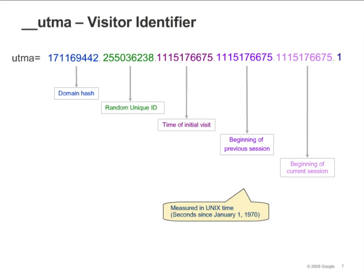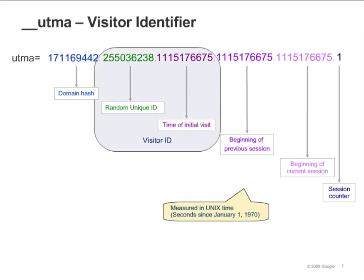Notice that the last three timestamps are the same — what does this tell you? The last number is the session counter, which tells you the number of times you have visited the site and increments with each visit. The session counter here is 1, and the last three timestamps are all the same because this is your first visit. The random unique ID combined with the first timestamp make up the visitor ID that Google Analytics uses to identify unique visitors. These details allow Google Analytics to calculate the number of unique visitors and the number of visits.